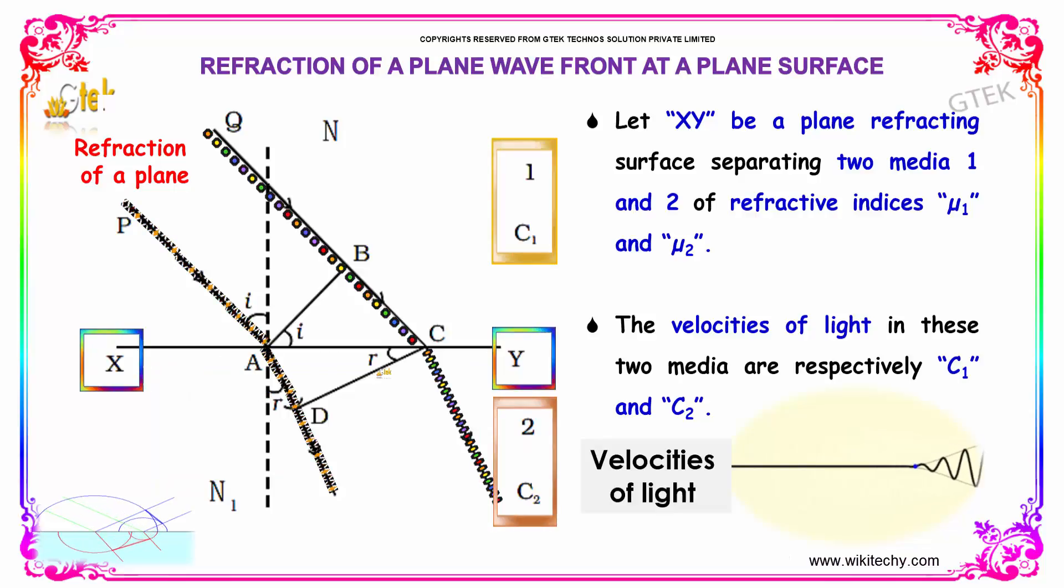Let XY be a plane refracting surface separating two media, 1 and 2, with refractive indices mu1 and mu2. The velocities of light in these two media are respectively c1 and c2.